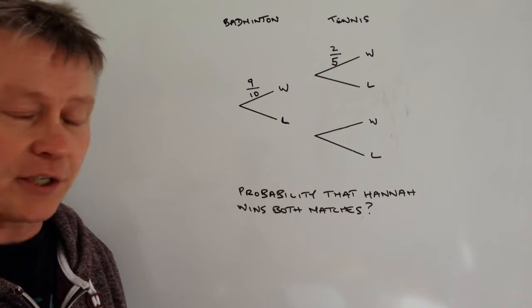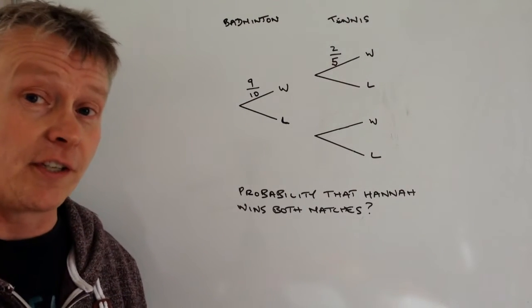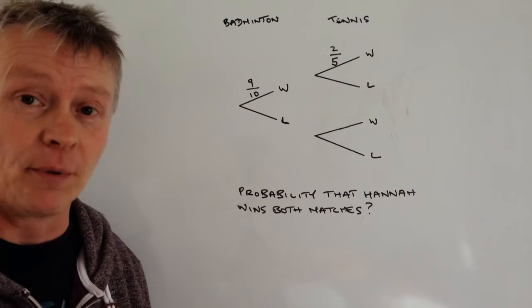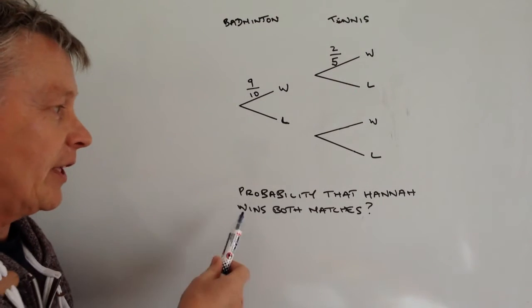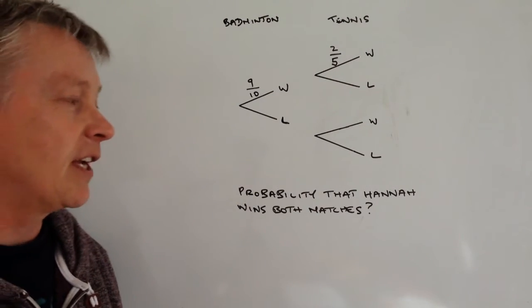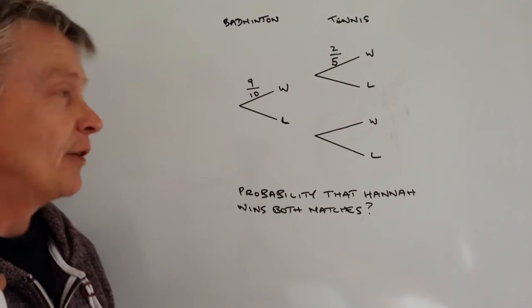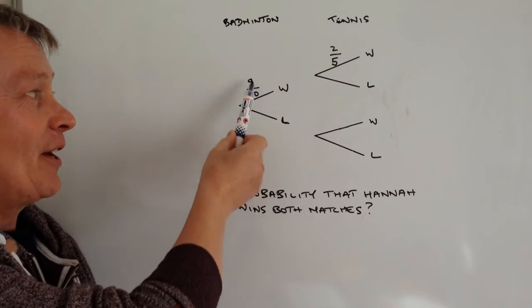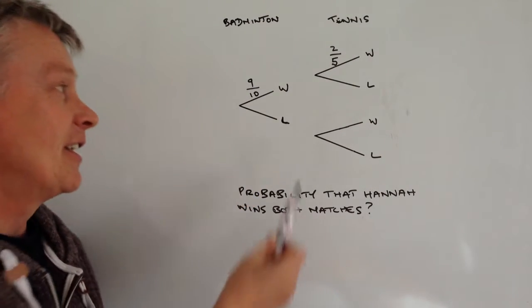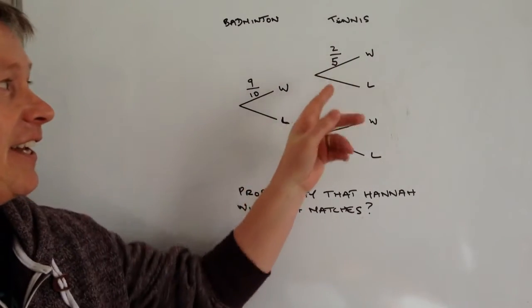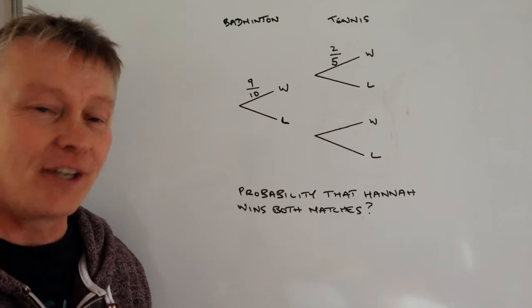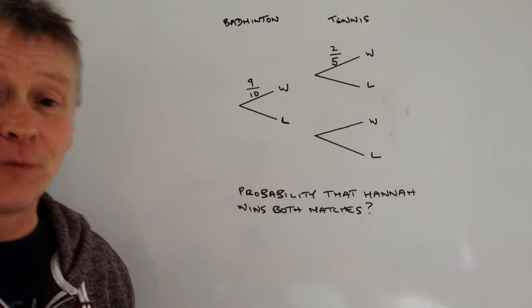In this particular question we've been given two things to do. The first one is to complete the probability tree and the second one is to calculate the probability that Hannah wins both matches. One is a badminton match where nine out of ten matches she wins, and tennis where two out of five matches she wins.